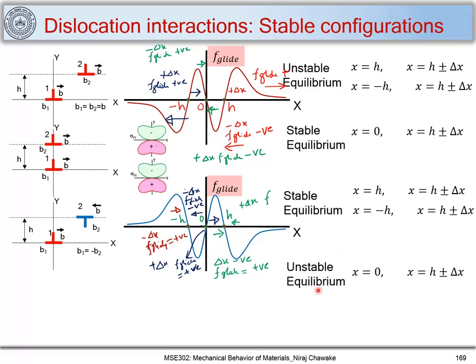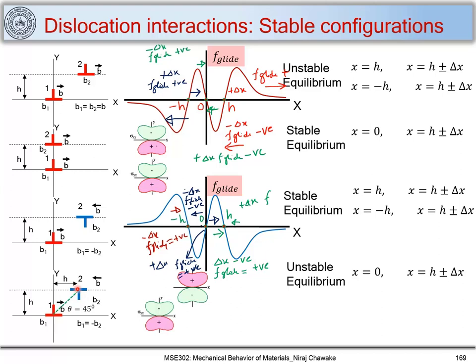For the positive and negative edge dislocation pair, x equal to zero is an unstable configuration and x equal to h and x equal to minus h are stable equilibrium positions. Since x equal to h and y equal to h, the angle between these two dislocations is 45 degrees, and this is the stable configuration for a positive and a negative dislocation on parallel slip planes h distance apart. The stress fields confirm that their interaction maintains this 45-degree angle.